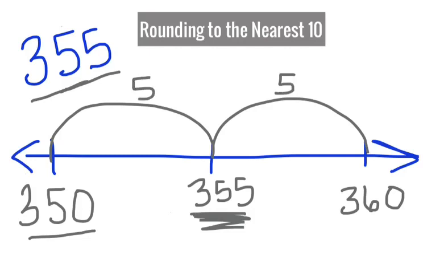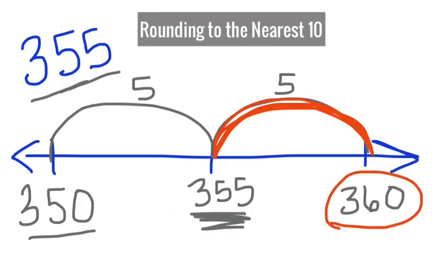The rule is when we're rounding, if both jumps are the same, we always round to the larger number. So three fifty-five to the nearest ten is three-sixty.